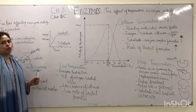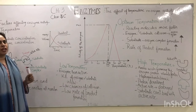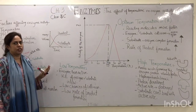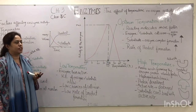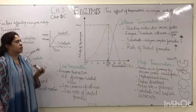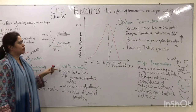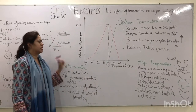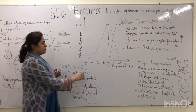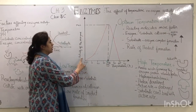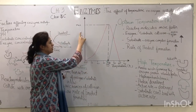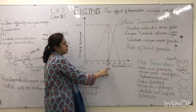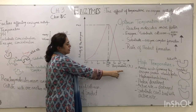We are going to evaluate and analyze two of these factors — temperature and pH — in this chapter. We are plotting a graph with the activity of the enzyme along the y-axis and temperature along the x-axis.